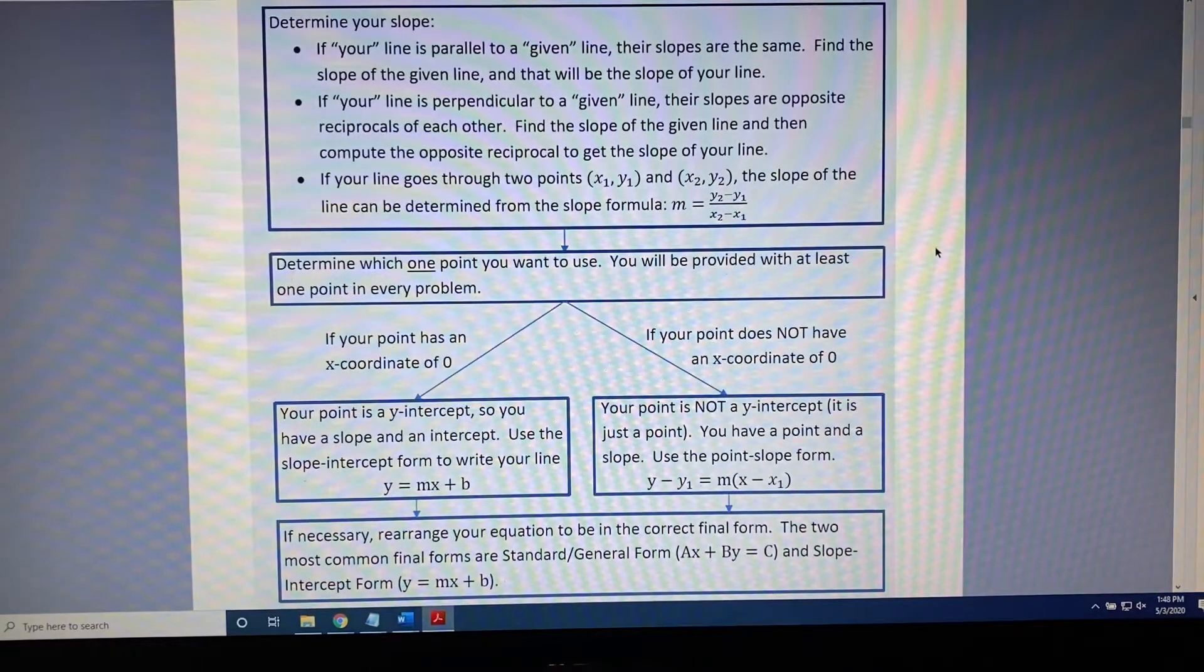We know we need a slope and a point. The first box of our flowchart helps us get the slope. The second box of our flowchart helps us get our point.